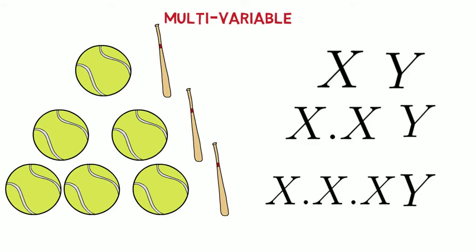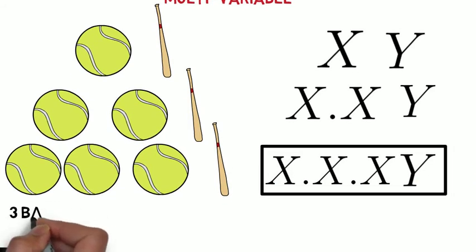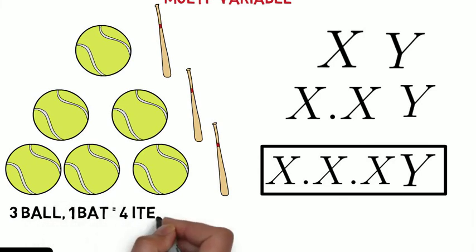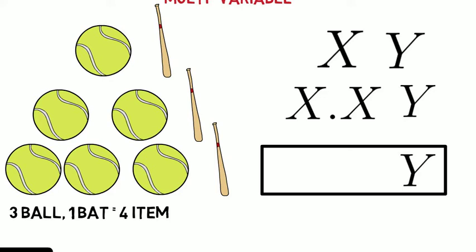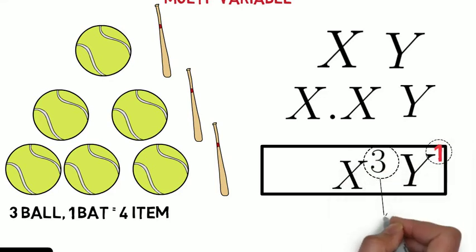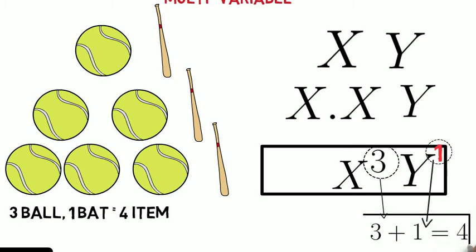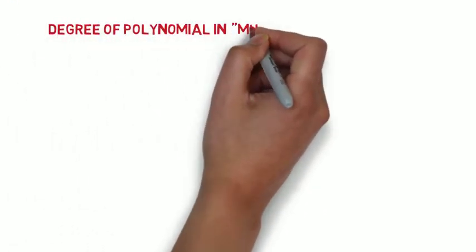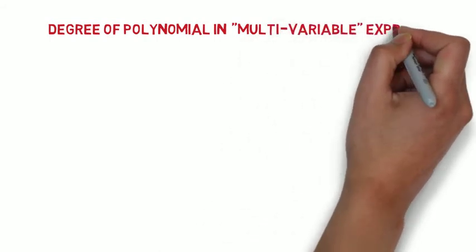Now can you tell me, in which situation we have most number of items? Of course, it is the third situation. As here we have three balls and one bat, means total item 4. Also, focus we can write the situation in terms of exponent. Now, let's move on to finding degree in multi-variable polynomial expression.